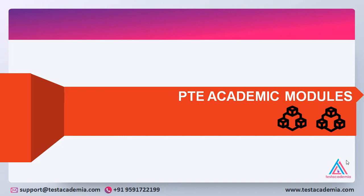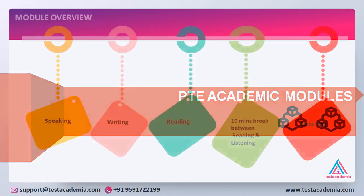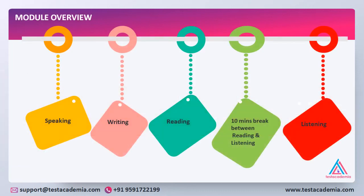You will use a computer and a headset to listen to, read and respond to questions. In this video we would take an overview on all four modules — speaking, writing, reading and listening. We would try to understand the challenges that we would face in achieving our desired score of 79 plus in each of these modules.